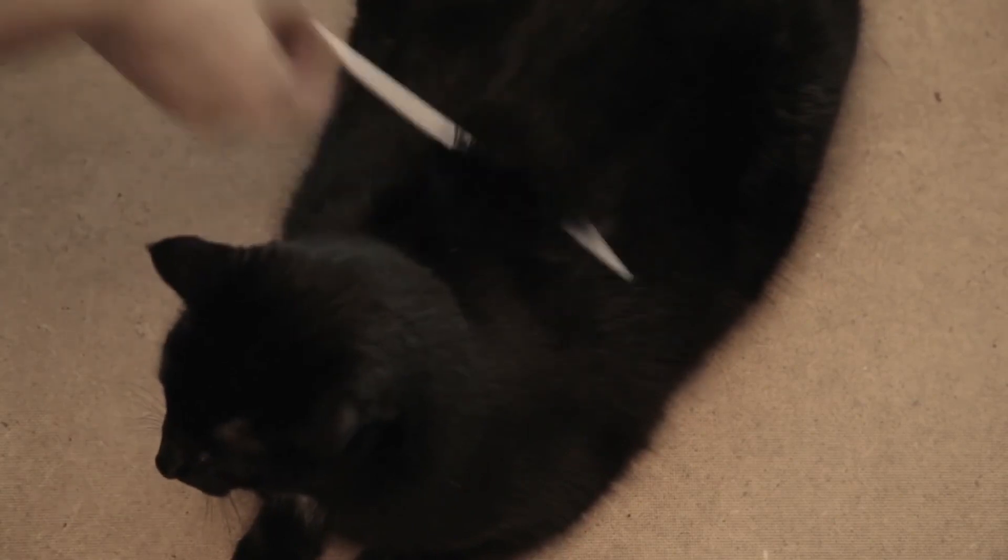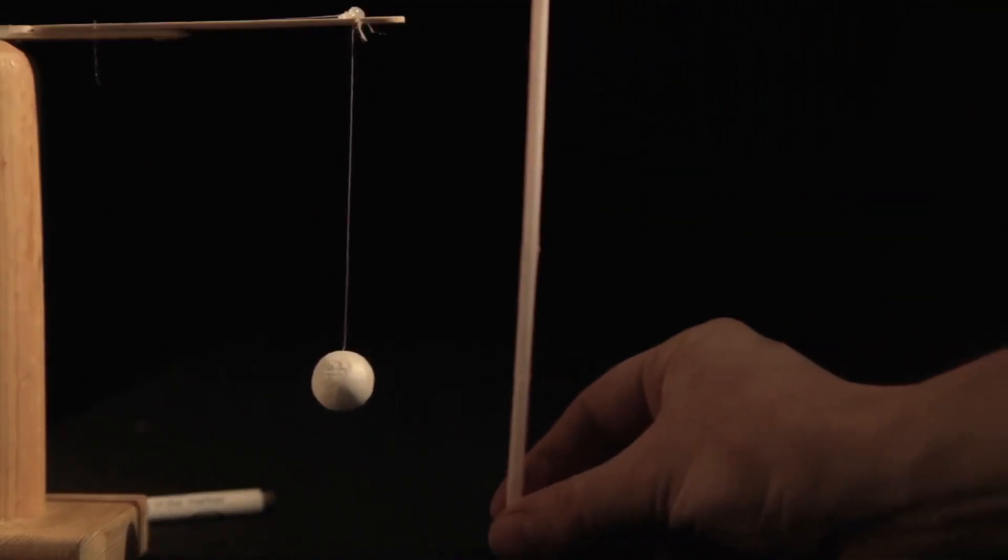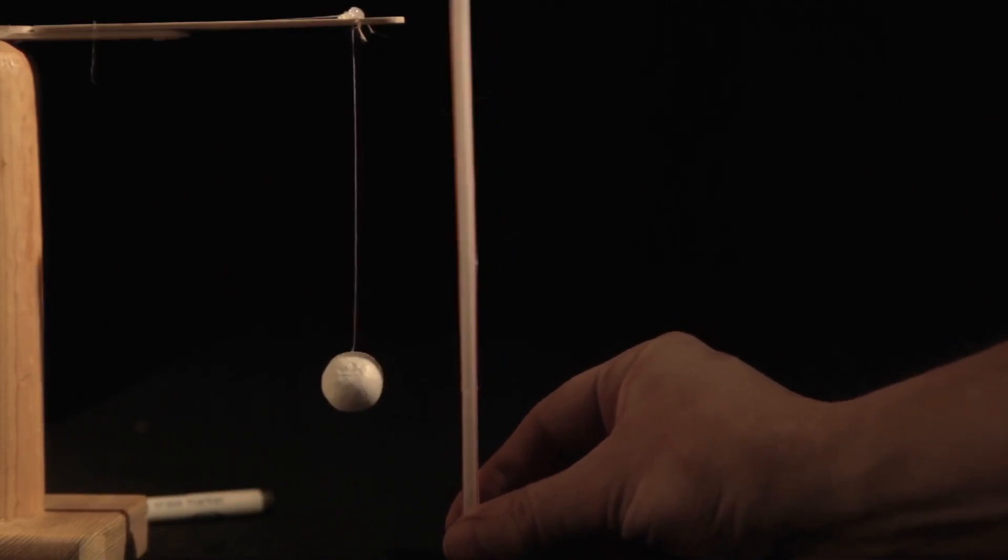And we also began trying to measure this force that Thales had encountered. One way to do this was to suspend a piece of spongy plant, called a pith ball, from a thread. And when we rubbed an insulator against fur and brought it near the pith ball, it would pull on it, causing a deflection.